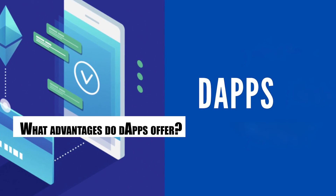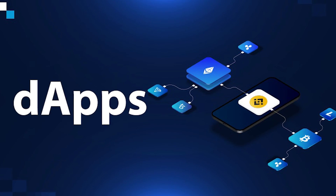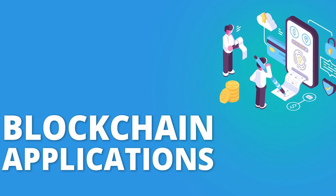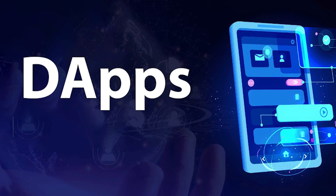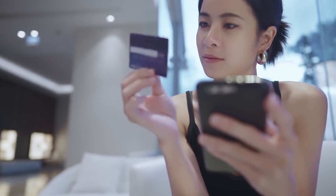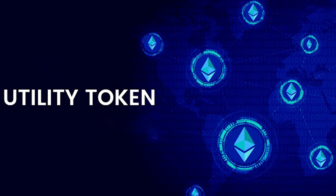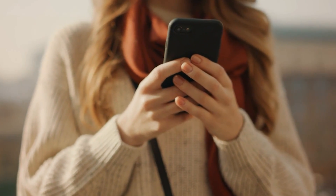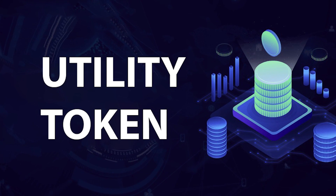What advantages do dApps offer? Now that we have a good understanding of what a dApp looks like and how it works, let's discuss some of the most significant advantages. First, utility tokens: many dApps include a utility token that controls the platform and its functions, similar to how you pay to use traditional programs. Several utility tokens support protocols like in-app purchases and other features, enabling high scalability by continuously adding and enhancing functionality to an existing layer in the dApp.